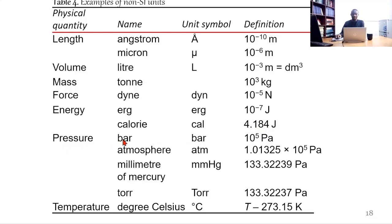Pressure: bar, atmosphere atm, millimeter of mercury mmHg, torr. You'll notice this is small t, this is capital T. Various definitions are given here. Temperature: degrees Celsius, symbol °C, defined as T minus 273.15 kelvin.